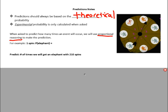For example, on one spin, what is the probability of getting an elephant? If you look at the spinner, there are four elephants and seven total animals. We're going to base the prediction on the theoretical probability: how many elephants over how many total outcomes. There are four elephants and seven outcomes.